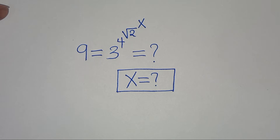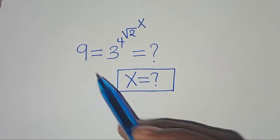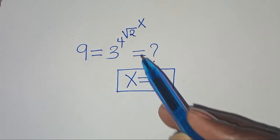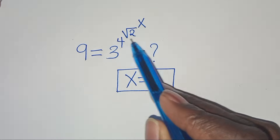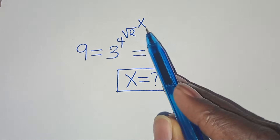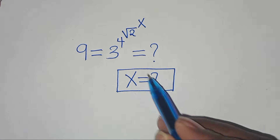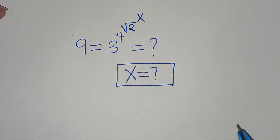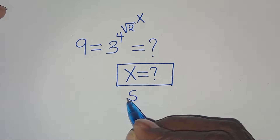Hello everyone, you're welcome to solve this nice exponential equation: 9 is equal to 3 to the power of 4 to the power of square root of 2 to the power of x. What is the value of x? Let's provide a solution.